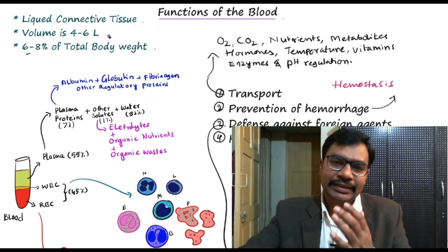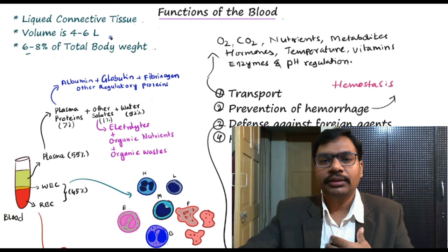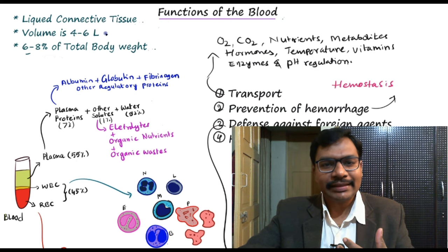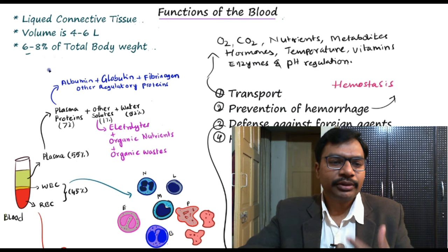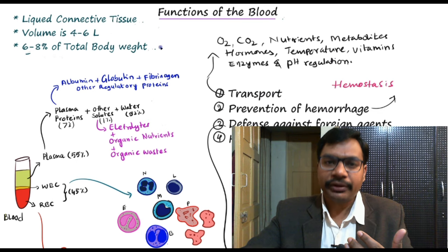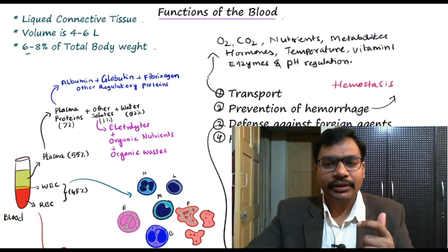Hello everyone. In this lecture I would be discussing about basic organization and functions of the blood. Blood is a liquid connective tissue handled by the cardiovascular system. We have a total of 4 to 6 liters of blood in our body, which constitutes around 6 to 8 percent of total body weight.